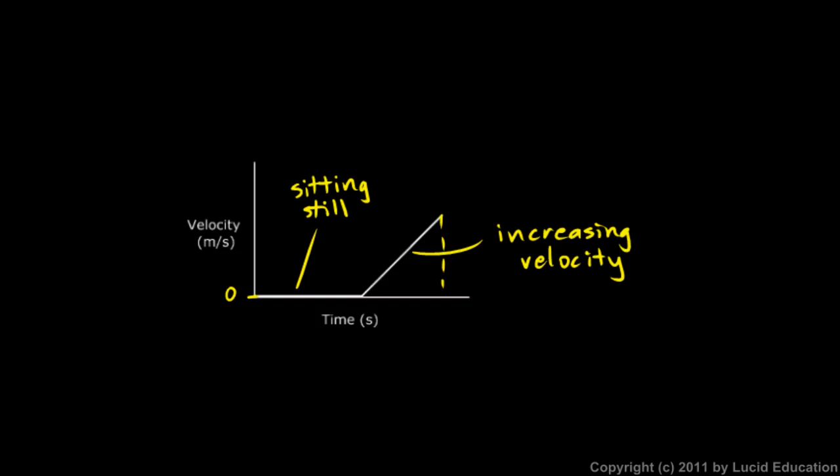So those are just a few examples of interpreting graphs of velocity. Don't get graphs confused if you have one graph of velocity versus time and then another graph of position versus time. They're different things. So with that, we'll wrap up chapter one.